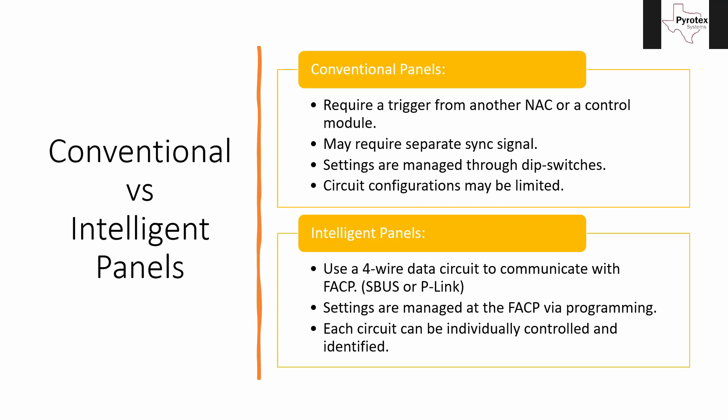All the settings in the intelligent panels are managed through the control panel via programming — there are no dip switches for that on board. The only dip switches on most of these intelligent panels are just to set the address so the fire alarm control panel knows which power supply or amplifier this is. In that programming, each circuit can be individually controlled, configured, and identified.